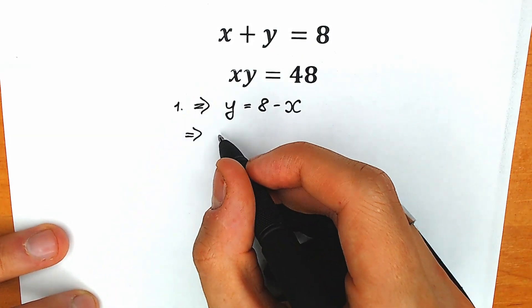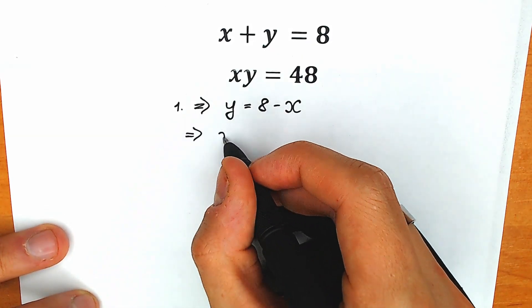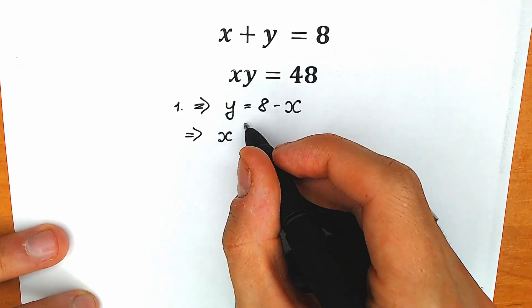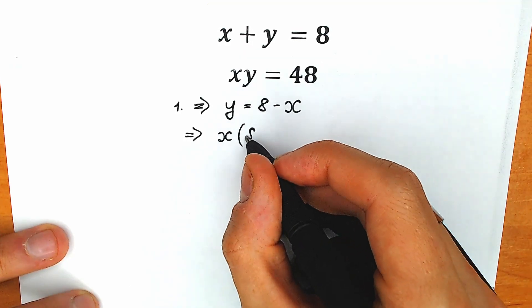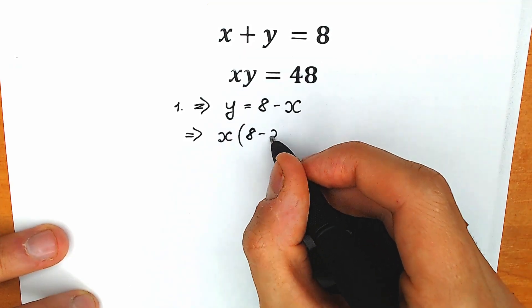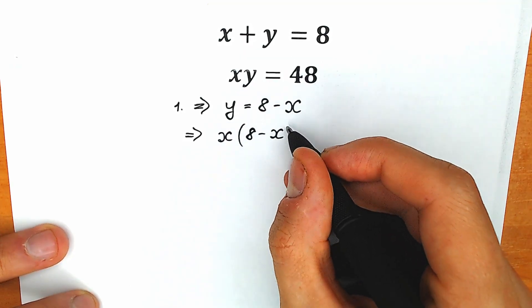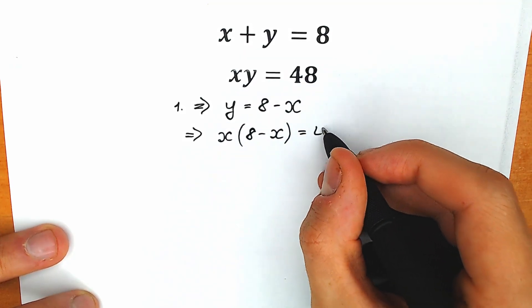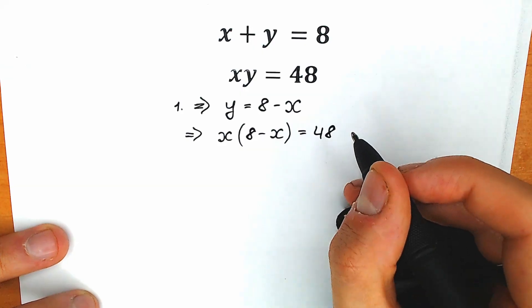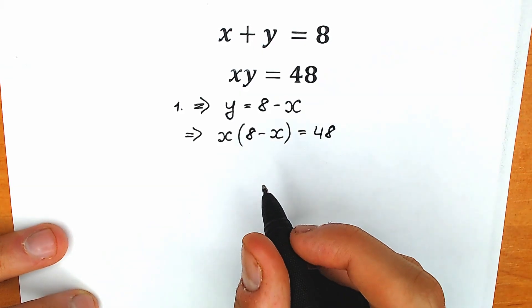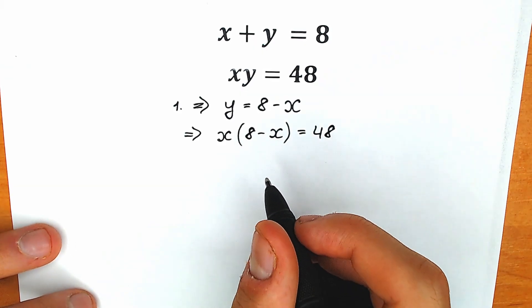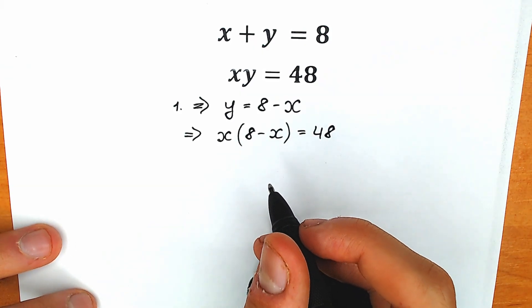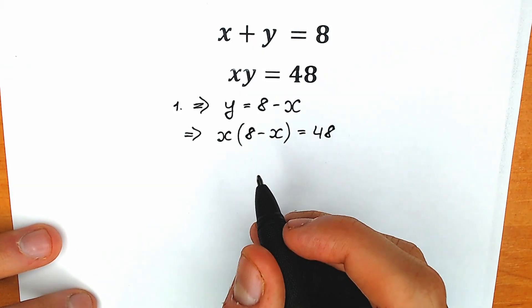As a result, what can we get from here? x times (8 minus x) is equal to 48. And right now let's solve this equation — we have only one variable.